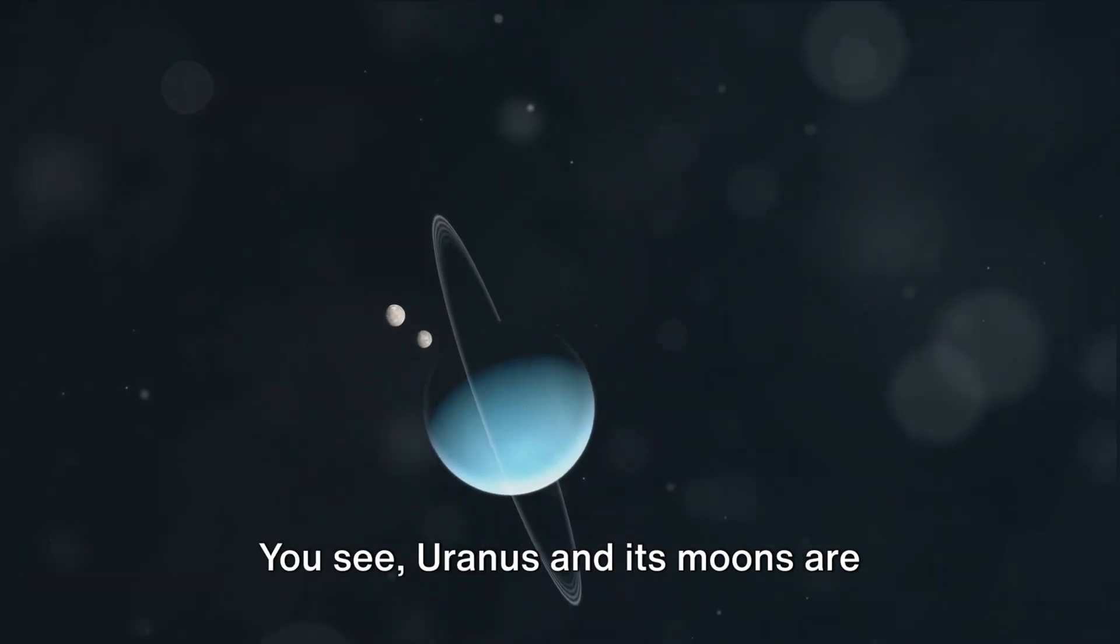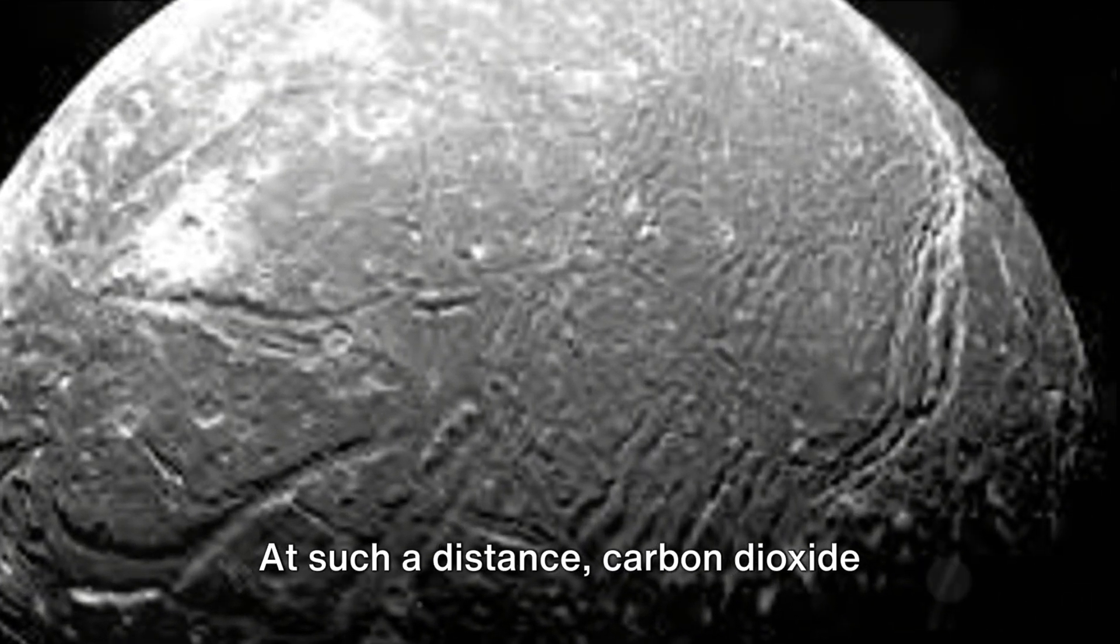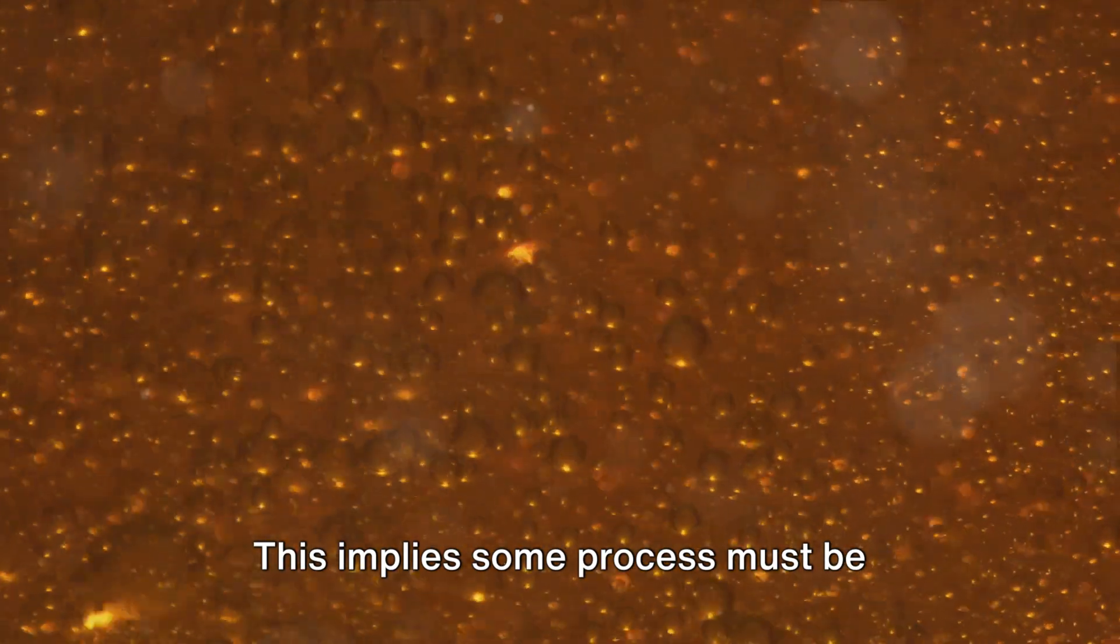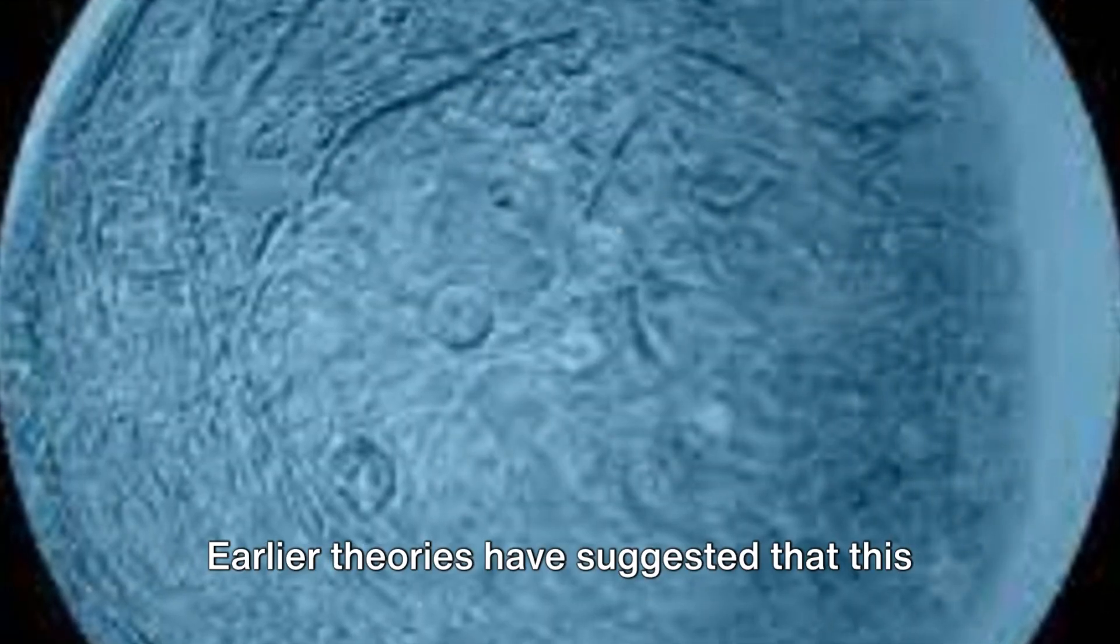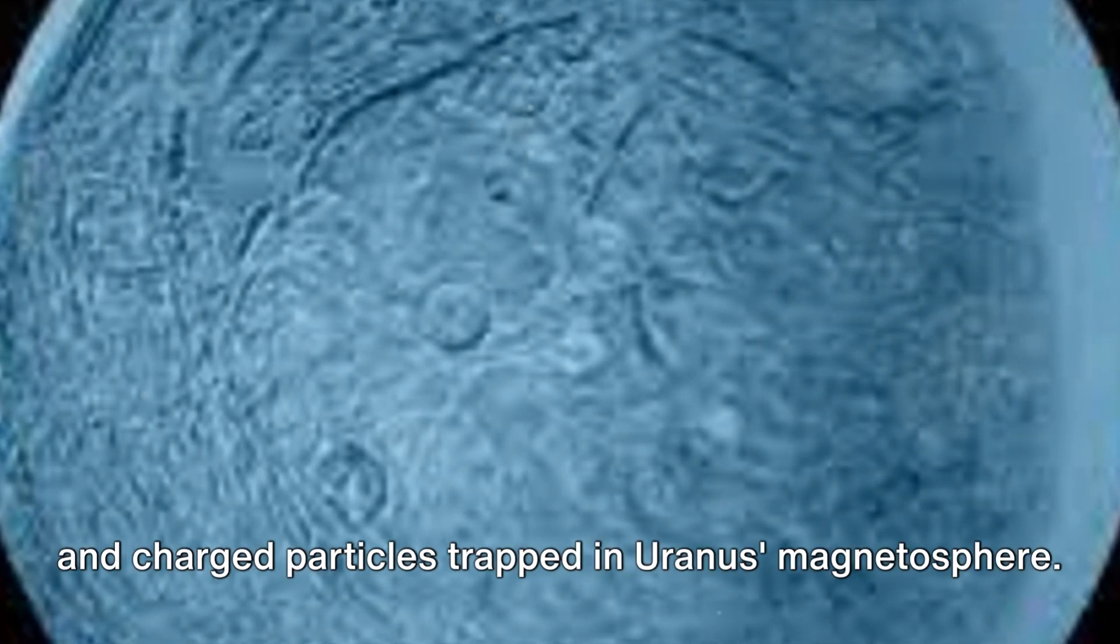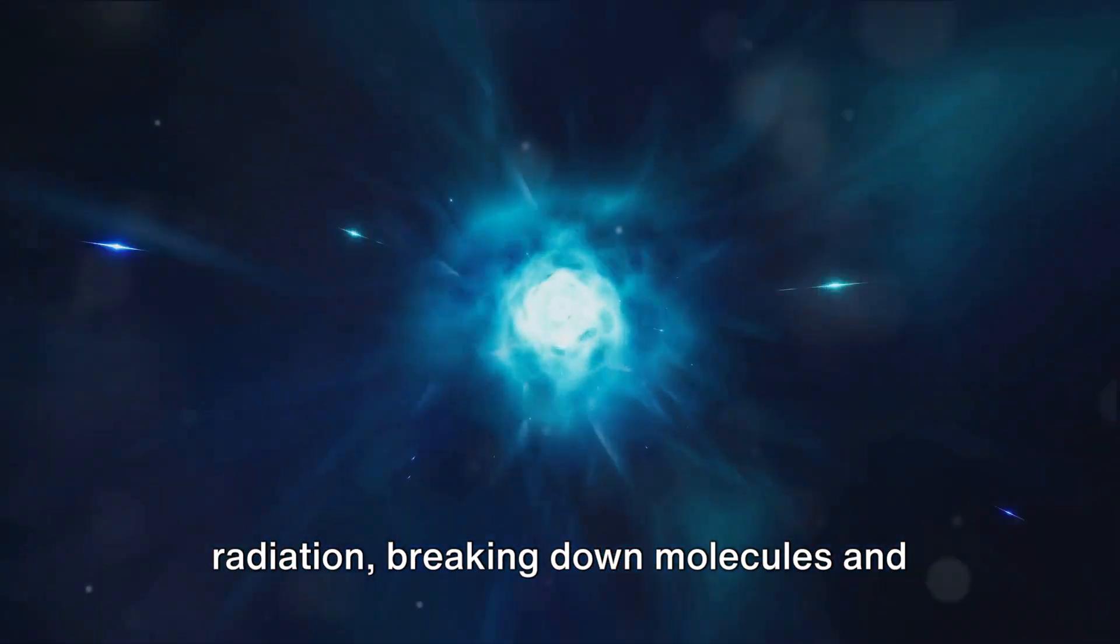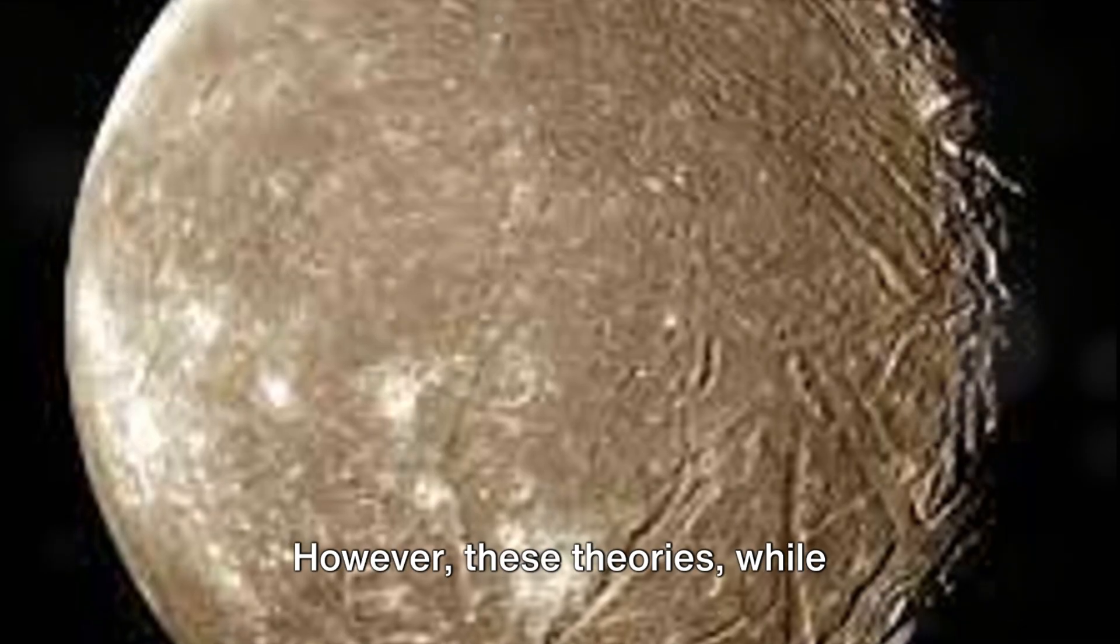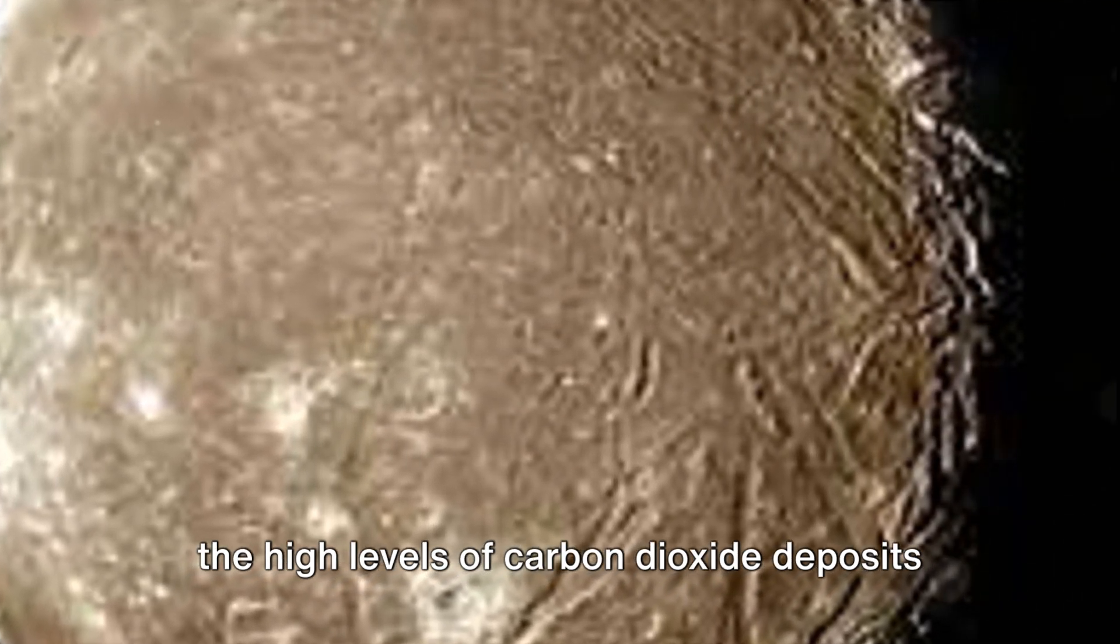You see, Uranus and its moons are situated a whopping 20 times further from the sun than Earth. At such a distance, carbon dioxide typically turns to gas and is lost to space. Yet, Ariel's surface is coated with it. This implies some process must be continually refreshing the carbon dioxide on Ariel's surface. Earlier theories have suggested that this recurring replenishment occurs as a result of interactions between Ariel's surface and charged particles trapped in Uranus's magnetosphere. These particles provide ionizing radiation, breaking down molecules and leaving carbon dioxide behind, a process known as radiolysis. However, these theories, while intriguing, were not sufficient to explain the high levels of carbon dioxide deposits on Ariel.